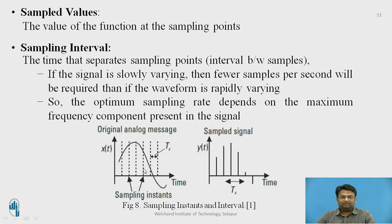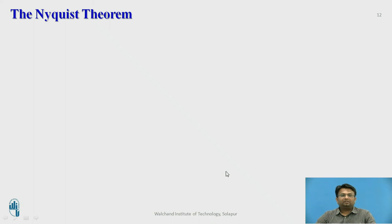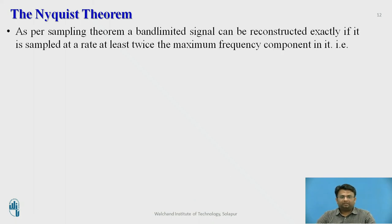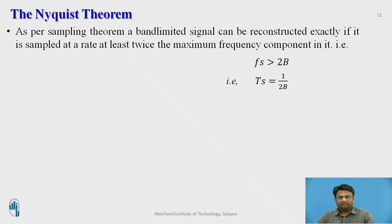From the diagram, the dotted line represents the sampling instant. TS is the interval between the two sampling instants. As per the Nyquist theorem, a band-limited signal can be reconstructed exactly if it is sampled at a rate which is twice the maximum frequency component present in it. That is, the sampling frequency FS should be greater than 2B, where FS represents the sampling frequency and B represents the bandwidth of the audio signal.